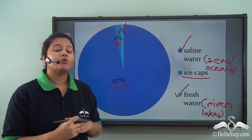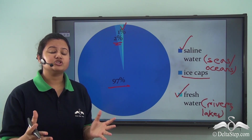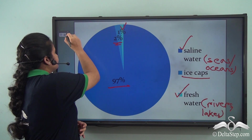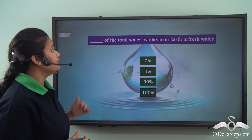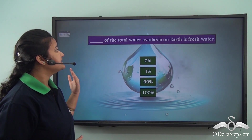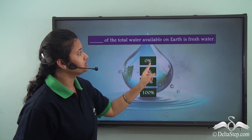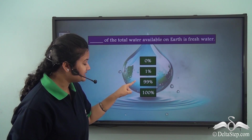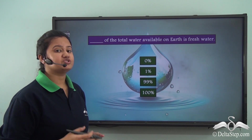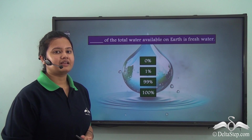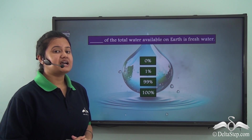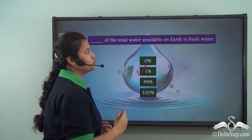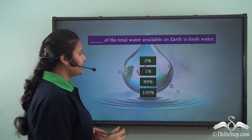We must stop water contamination and look for ways to conserve this precious resource. Before proceeding, here is an objective: what percentage of the total water available on earth is fresh water — 0%, 1%, 99%, or 100%? We just discussed that out of 100%, just 1% is available as fresh water on earth, so the correct option is 1%.